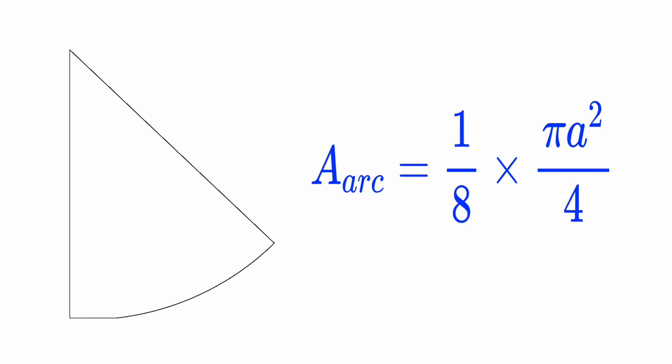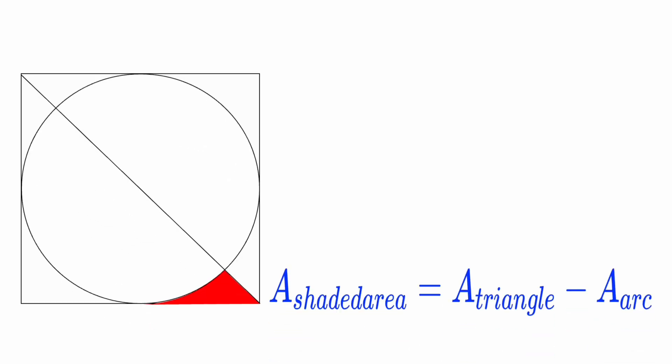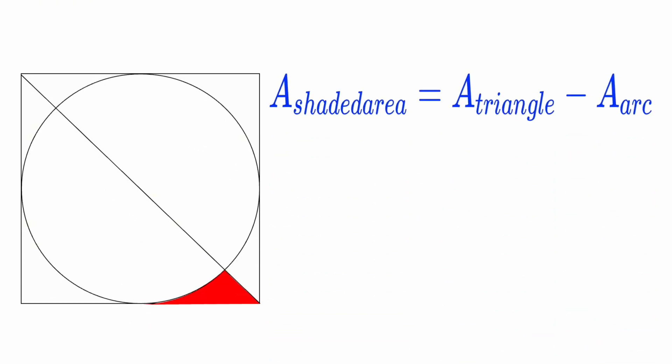Now for the curved part, the arc. This arc is also one eighth of the full circle. And the area of a full circle is π times radius squared. The radius here is a over two because the circle is inscribed inside the square. So radius equals a divided by two. Area of the full circle is π times a over two squared. Arc area is one eighth of that.